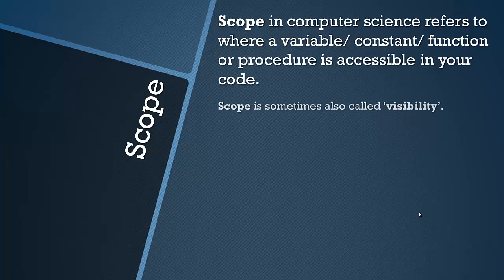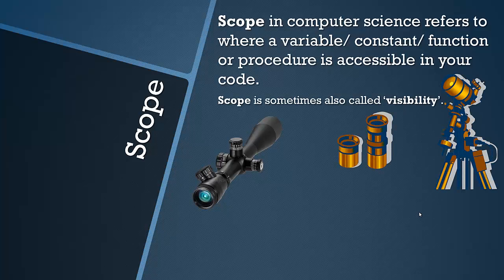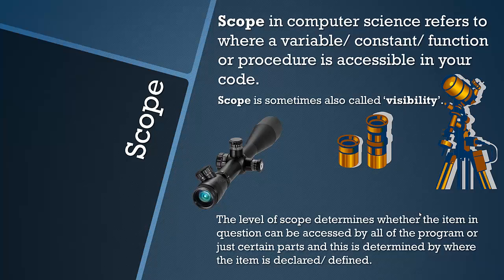That doesn't make much sense initially. So if I tell you that scope is sometimes also called visibility, that makes more sense. Even more so if you think of a scope as in the scope of a sniper, a gun, or a telescope here. So it's almost like a zoom. The level of scope determines whether the item in question can be accessed by all of the program or just certain parts. And this is determined by where the item is declared or defined.